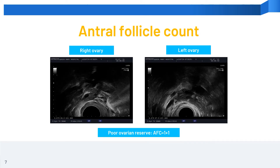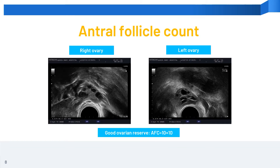The antral follicles can be seen as dark circles on ultrasound. This is an example of poor ovarian reserve, where the antral follicle count is only one at the right ovary and one in the left ovary. In contrast, this is an example of a patient with good ovarian reserve, where the antral follicle count is 10 on each side. The higher the antral follicle count, the more likely there will be a higher number of eggs collected.